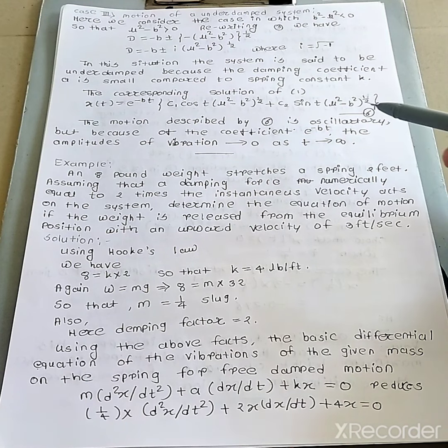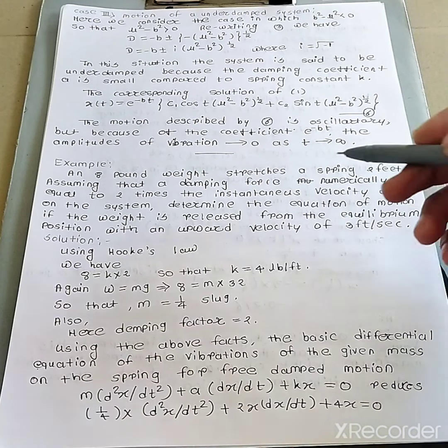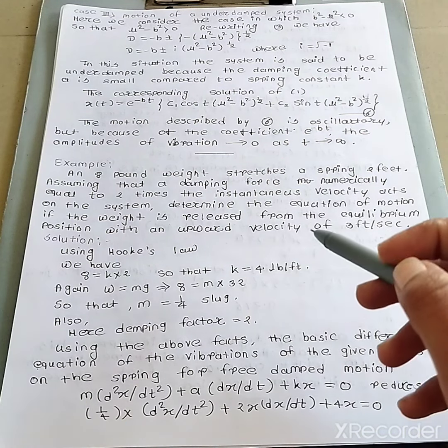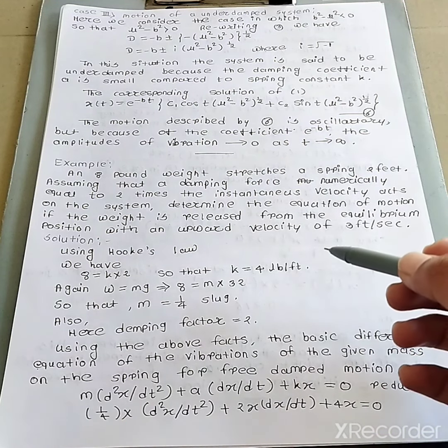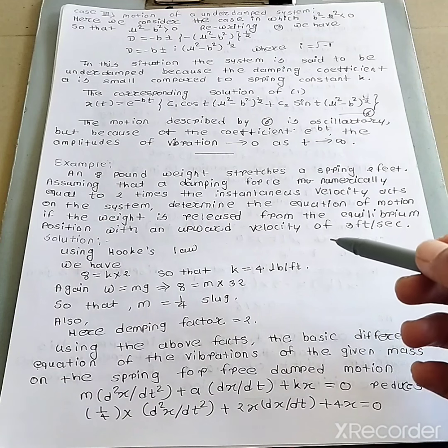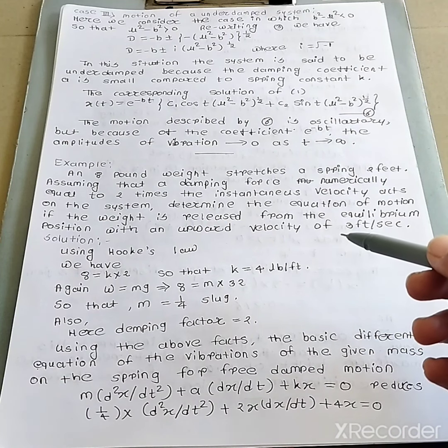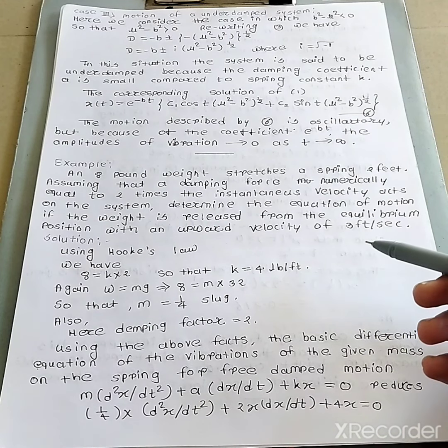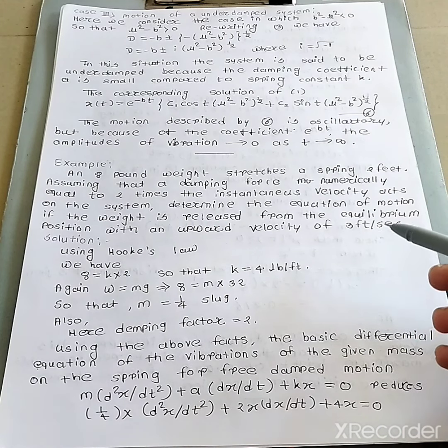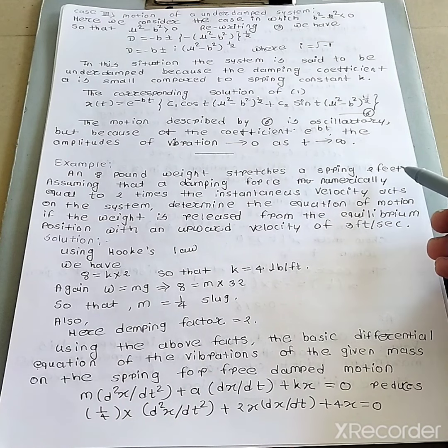Now the first example. An 8-pound weight is attached to a spring, stretching it 2 feet. Assume that the damping force is numerically equal to 2 times the instantaneous velocity. Determine the equation of motion if the weight is released from the equilibrium position with an upward velocity of 3 feet per second.